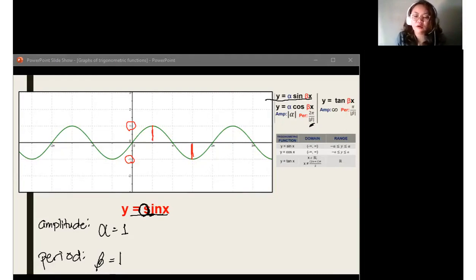No, ma'am. Okay. It's not yet the period. So, what should we do? Anong gagawin pala natin? Christine? Use the formula pong 2 pi over beta. Okay. Very good. Now, that we know the value for beta, we get the formula and substitute the value there.